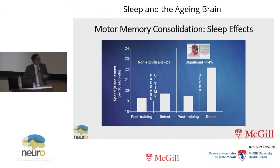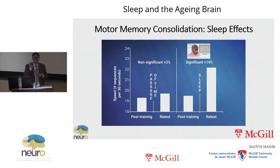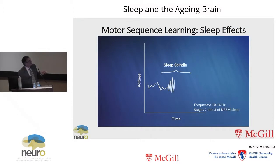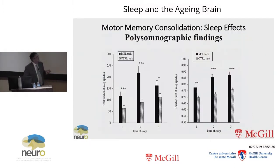When we looked at the EEG recorded during the night — which allows us to examine different stages of sleep — we found that there was only one type of oscillation significantly related to improvement in performance. These were spindles: events that occur during sleep, especially during stage two and three, at a frequency of about 10 to 16 Hz. Comparing subjects on a control task to those trained on the sequence, we found an increase in the total number of sleep spindles as well as greater duration of spindles after sequence learning, found across all three phases of the night.